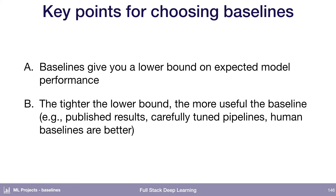Just quickly to summarize on baselines: the goal of a baseline is to give you a lower bound on how well you can expect your model to do. Since it's a lower bound, the tighter that bound is — the better the baseline you choose — the more useful it is. Using published results or human baselines is generally better than just training a linear model or something like that.